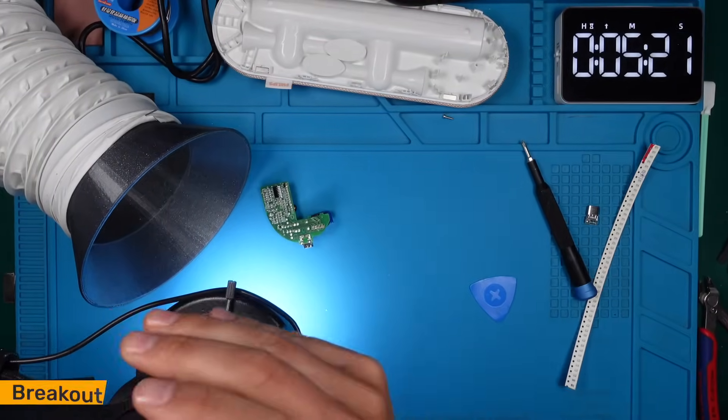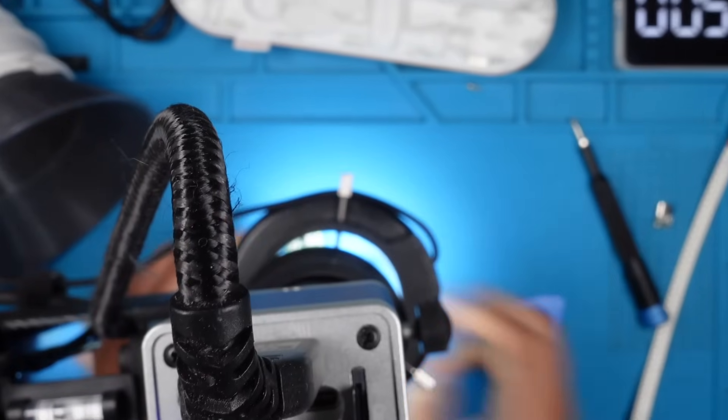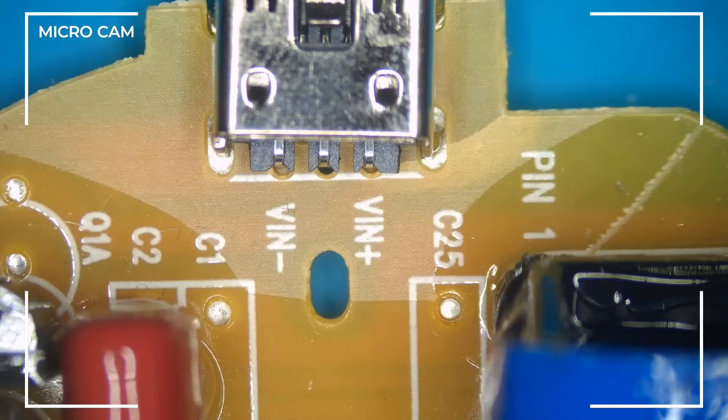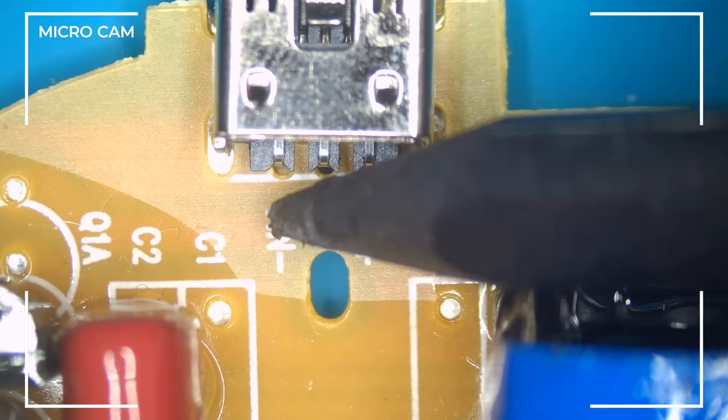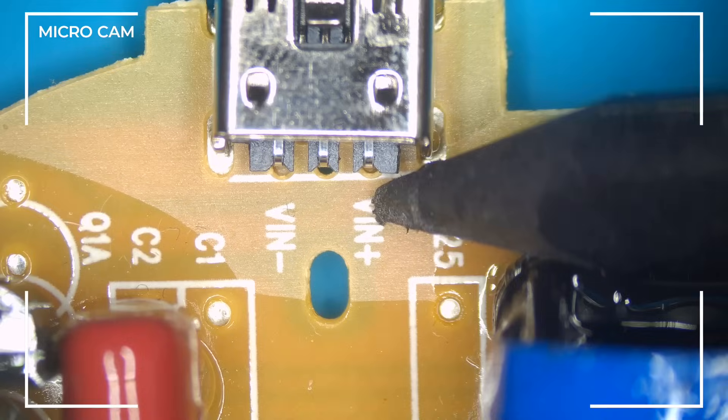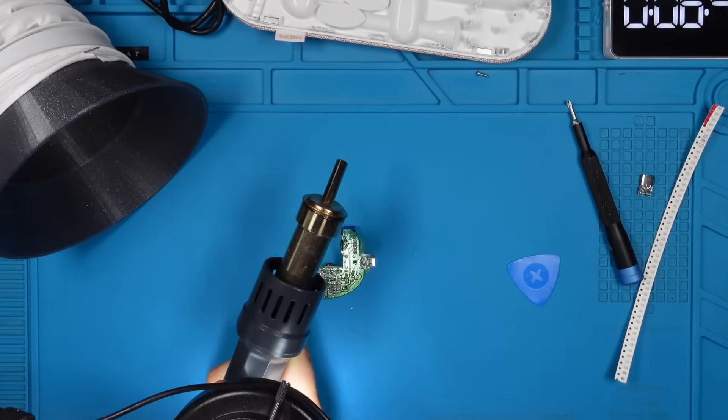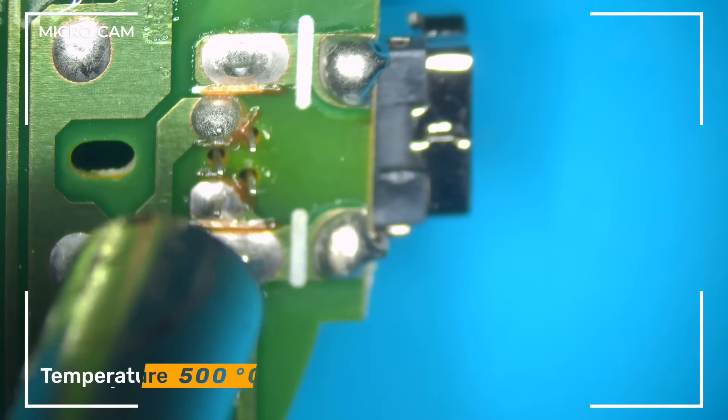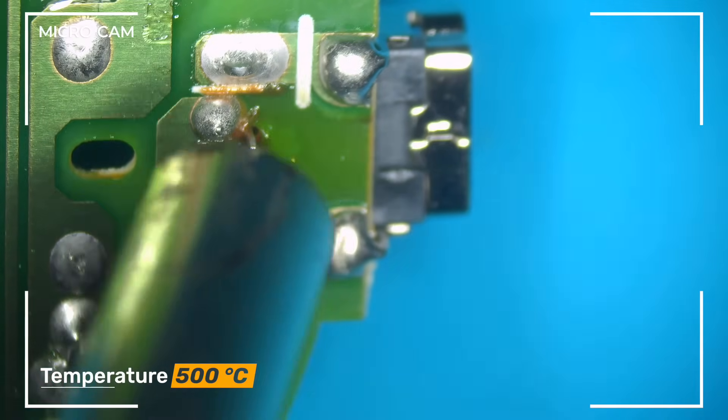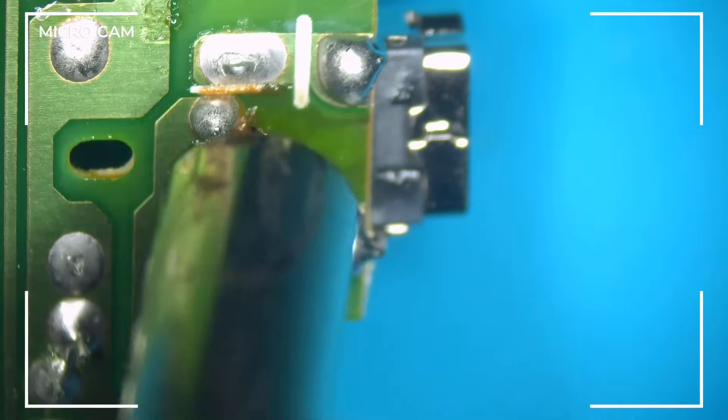But first we use our trusty microscope camera to remove the terrible mini-USB connector. Here we see the VIN+ and VIN- pins. These are the important ones for our mod. Let's turn it over and fire up our hot air soldering station. We use 500 degrees C to quickly remove the connector, but you can also use a regular soldering iron.